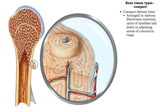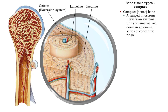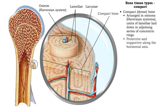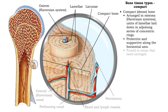Compact bone tissue is arranged in osteons, also known as Haversian systems. Osteons are formed where lamellae are laid down in a joining series of concentric rings. The tissue is protective and supportive along the horizontal axis. Compact bone is found in areas that need strength, such as the shaft of long bones.